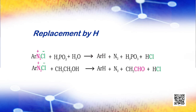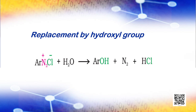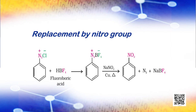Replacement by hydrogen: Certain mild reducing agents like hypophosphorous acid or ethanol reduce diazonium salts to arenes, and themselves get oxidized to phosphorous acid and acetaldehyde respectively. Replacement by hydroxyl group: If the temperature of the diazonium salt solution is allowed to rise up to 283 Kelvin, the salt gets hydrolyzed to phenol. Replacement by nitro group: When diazonium fluoroborate is heated with aqueous sodium nitrite solution in the presence of copper, the diazonium group is replaced by a nitro group.